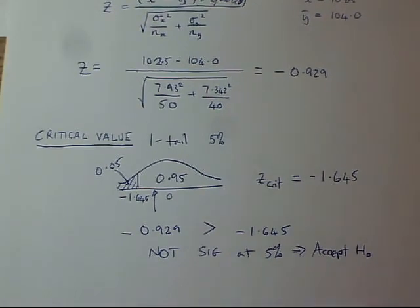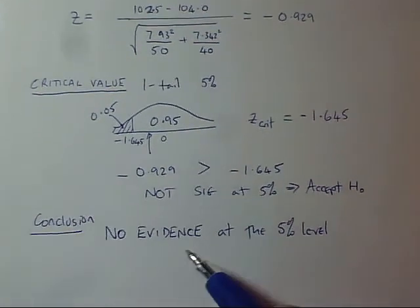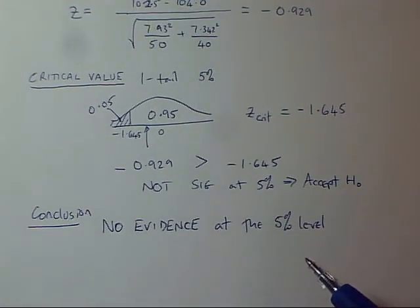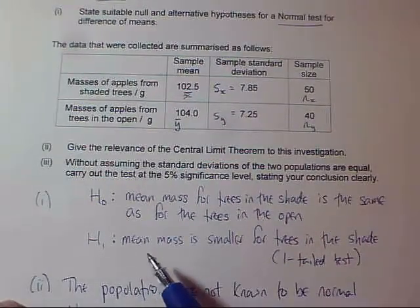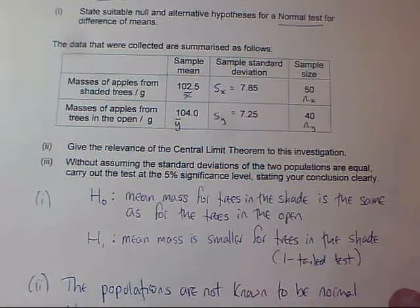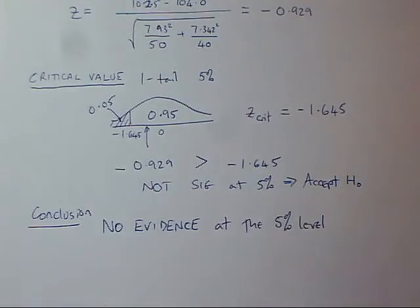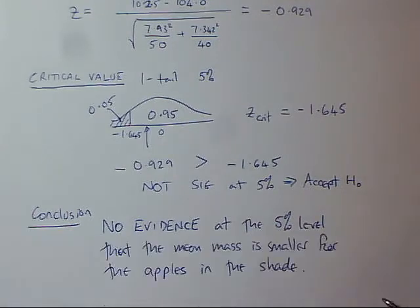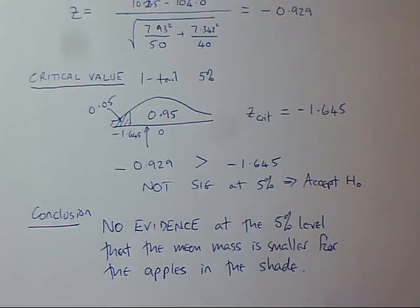Because I'm accepting H₀, I'm saying I have no evidence — no evidence at the 5% level. I have to look back at my hypotheses: H₁ was that the mean mass is smaller, it was a one-tailed test. So the conclusion is: there is no evidence at the 5% level that the mean mass is smaller for the apples grown in the shade. That's fully related back to the context. I've got my conclusion, all the data to back it up, and I'm done.